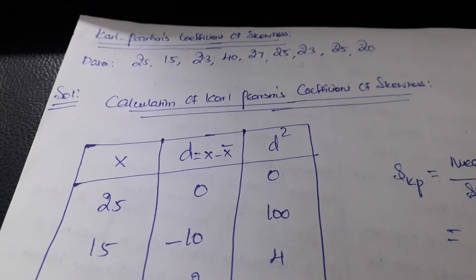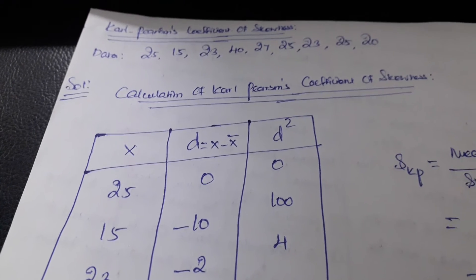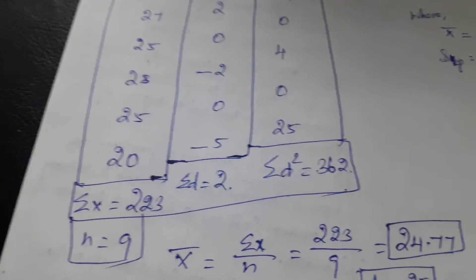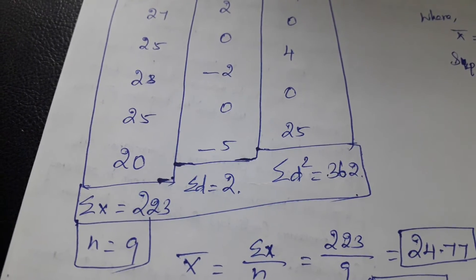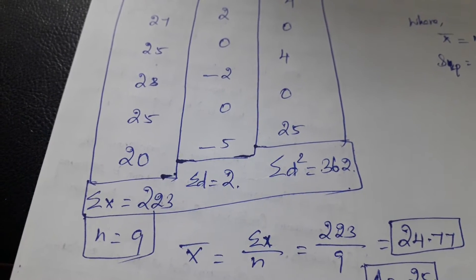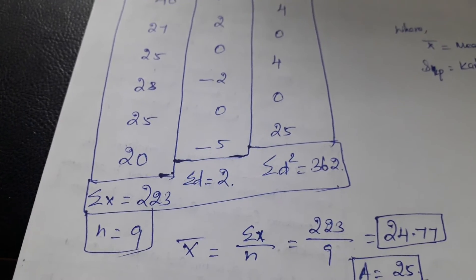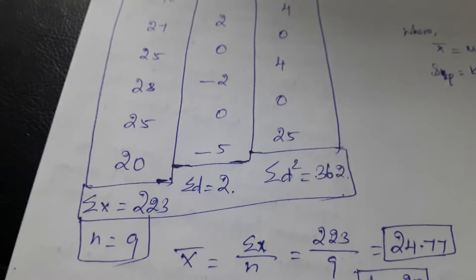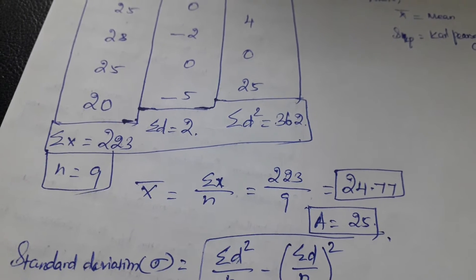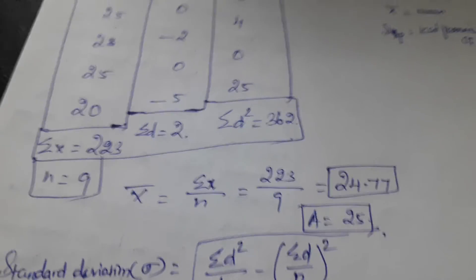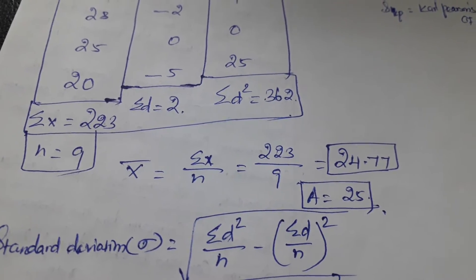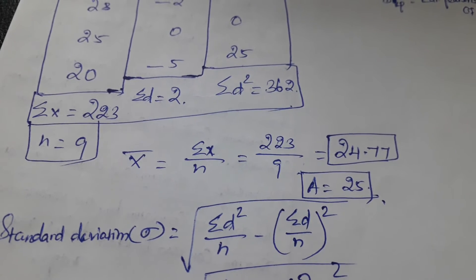First, from the given data, we put the values in the x column. Then we need to find the summation of x, which equals 223. Here n, the number of values, is 9. Then we find the mean: x̄ = summation x divided by n = 223 divided by 9, which gives us 24.77.